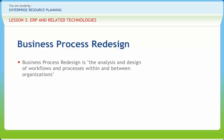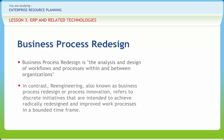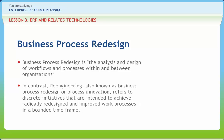Total Quality Management (TQM) or continuous improvement refers to programs and initiatives that emphasize incremental improvement in work processes and outputs over an open-ended period of time. In contrast, re-engineering, also known as business process redesign or process innovation, refers to discrete initiatives intended to achieve radically redesigned and improved work processes in a bounded timeframe. TQM and BPR share a cross-functional orientation.